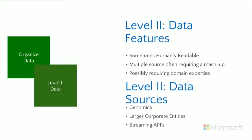That's the goal of level two data organization — taking multiple pieces of information, bringing them in, and turning them into something more digestible. Sometimes it's humanly readable and you just bring in multiple tables. Other times you need some domain expertise to really get your hands into that data. You'd see this in genomics, larger corporate entities, or streaming data with clear formatting coming in fairly quickly.